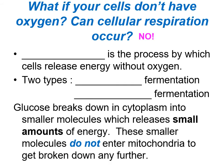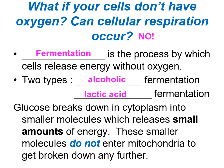The process by which cells release energy without oxygen is called fermentation. There are two types: alcoholic fermentation and lactic acid fermentation. In both types, glucose breaks down in the cytoplasm into smaller molecules, releasing small amounts of energy. These smaller molecules do not enter the mitochondria, because without oxygen the mitochondria can't do anything.